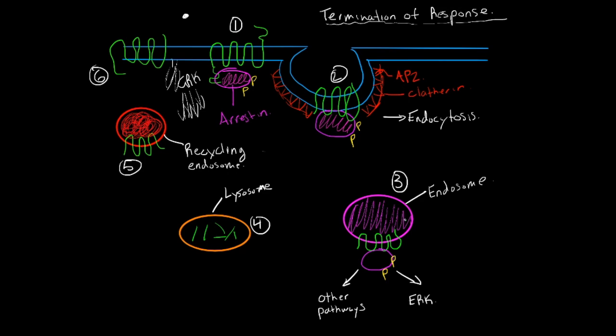In some cases, the receptors travel along the endocytic pathway into endosomes where the associated arrestin molecules serve as a scaffold for the assembly of various cytoplasmic signaling complexes. So the MAPK pathway would be an example of this.